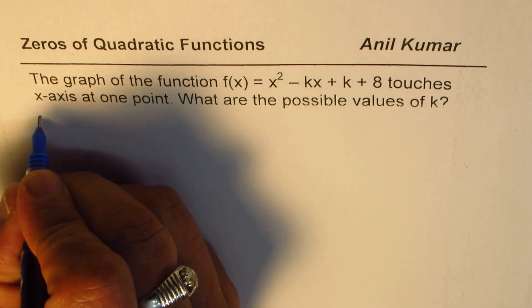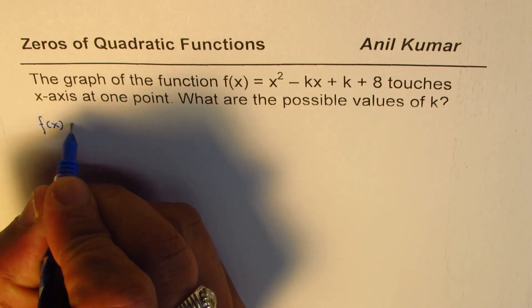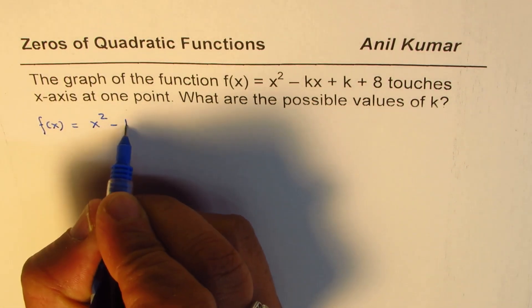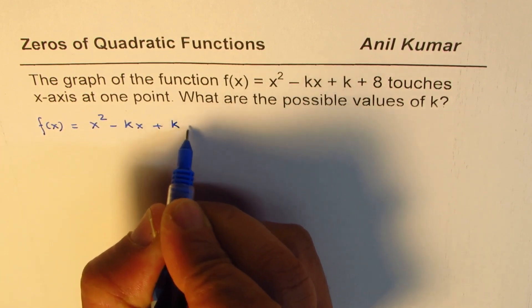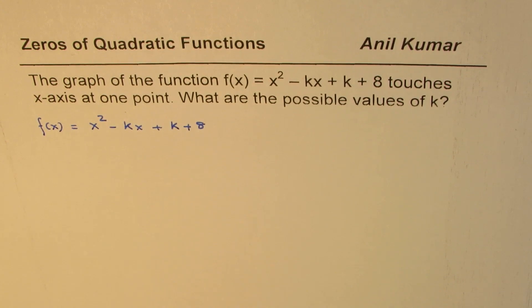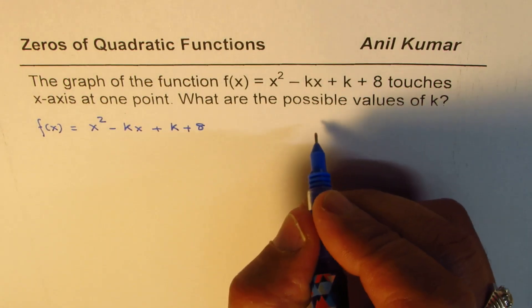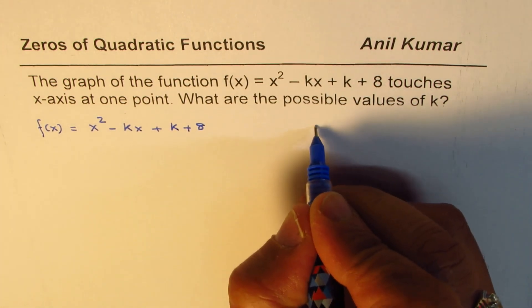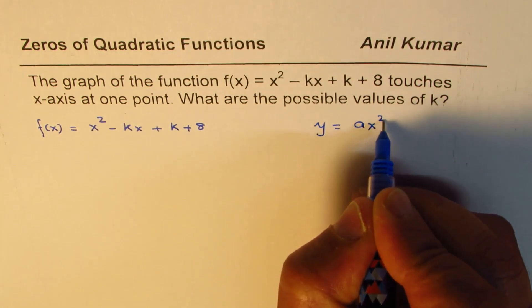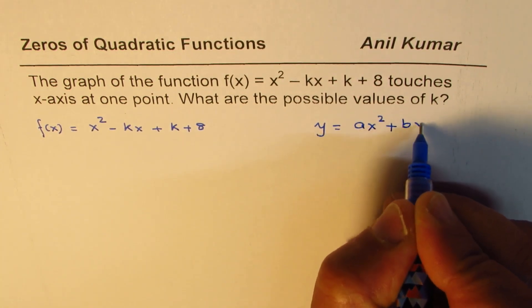We are given the function f(x) equals x squared minus kx plus k plus 8. As you can see, it is a quadratic function of the form, we can write in general,